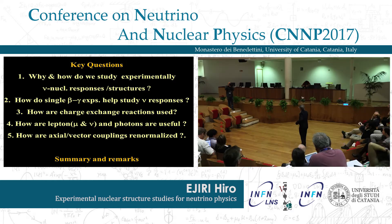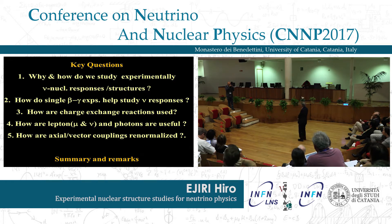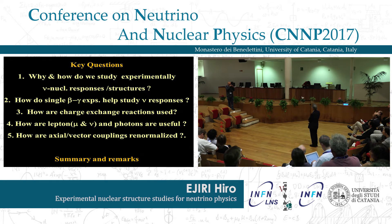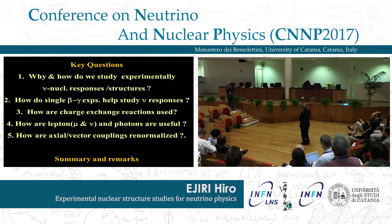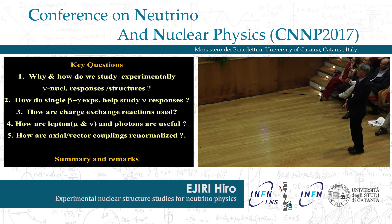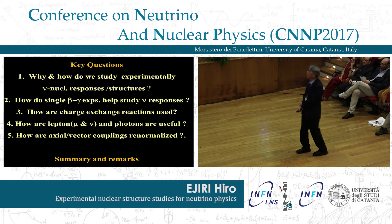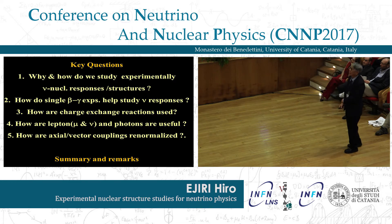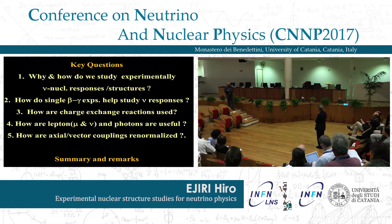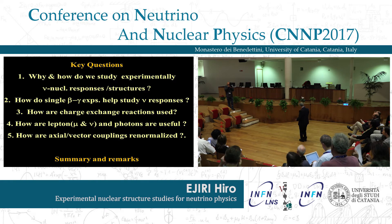I want to discuss mainly five topics: first, experimental aspects — why and how do we study experimentally neutrino nuclear responses and nuclear structures. Second, how single beta-gamma experiments help study neutrino response. How charge exchange reactions are used, how leptons — muons, neutrinos, and photons — are used, and finally, how the axial and vector coupling constants are renormalized. And a few summary remarks.